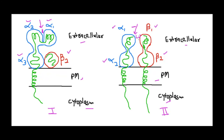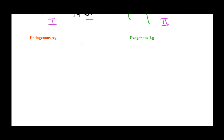In MHC class 2, there are again two polypeptide chains, but the alpha chain has two subunits — alpha 1 and alpha 2 — and the beta chain also has two subunits — beta 1 and beta 2. In class 2, it is the alpha 1 and beta 1 domains that form the peptide-binding cleft. The peptide-binding cleft of MHC class 1 is slightly smaller: it can hold a peptide of 8–10 amino acids, whereas MHC class 2 can hold a larger peptide of 13–18 amino acids.